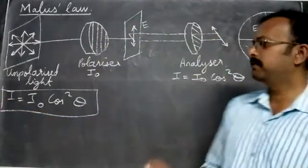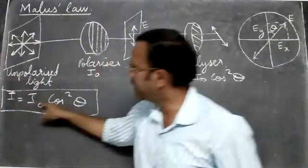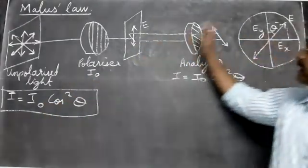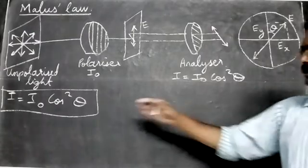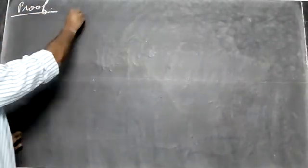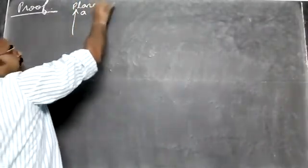So the equation is I = I₀ cos²θ. This is the statement of Malus's Law — the equation Malus discovered. I is the intensity of light which comes out, I₀ is the incident intensity, and theta is the angle. Now we must prove this — let's see the proof.